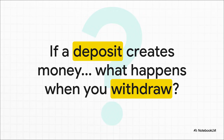We've just seen how a deposit creates money. But this whole process works in reverse too. What do you think happens to the total money supply when someone walks into a bank and withdraws 100 units of cash? The answer is just as powerful.